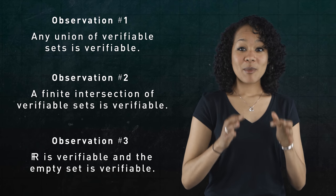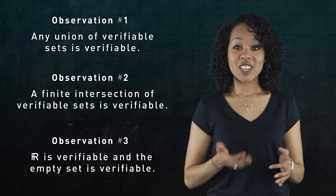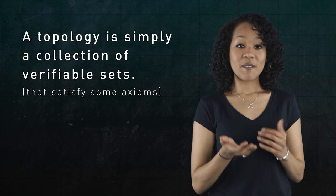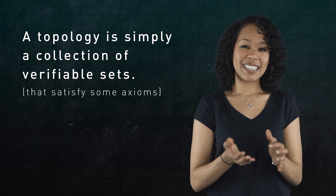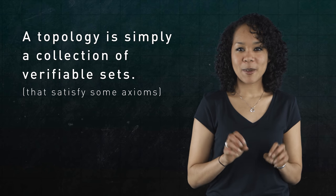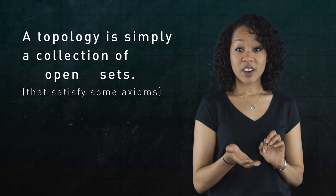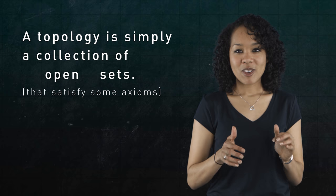But this is exactly what it means to have a topology on the set of real numbers. A topology is simply a collection of verifiable subsets. Except we've been using the word verifiable for illustrative purposes. The standard word is open, since, as we saw earlier, murky things happen on the boundary of open intervals. Let's put it all together.